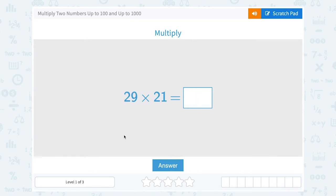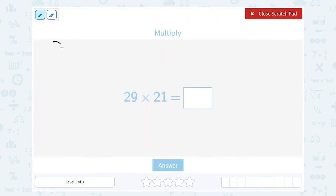Let's take a look at how to multiply two numbers up to 100 and up to 1,000. They asked us to multiply 29 times 21. So I'm going to write it this way, 29 times 21.